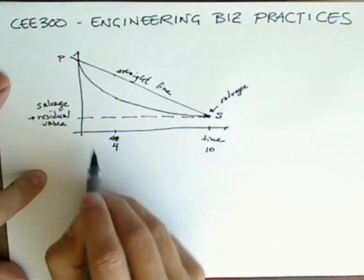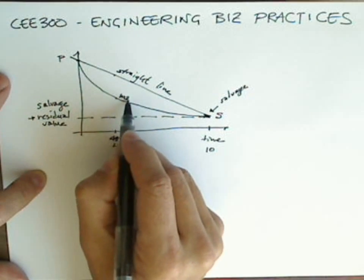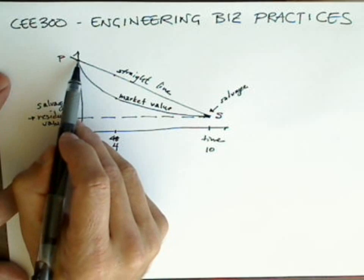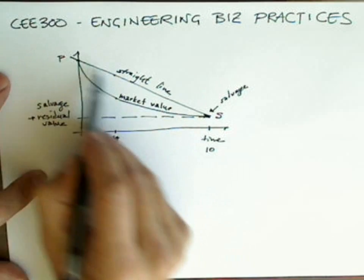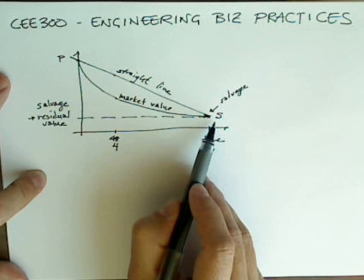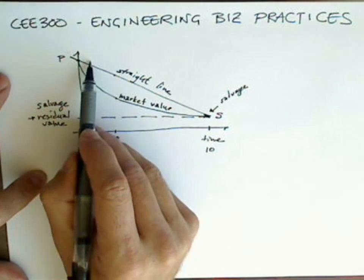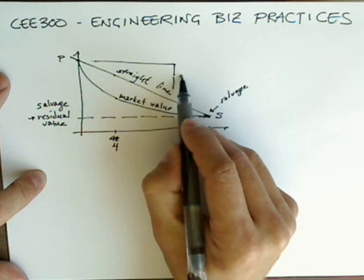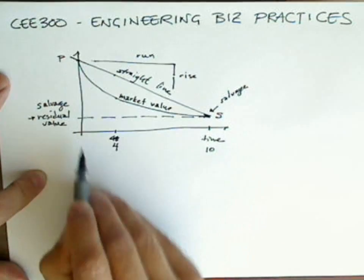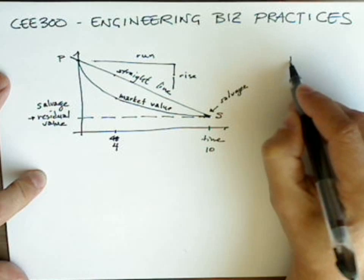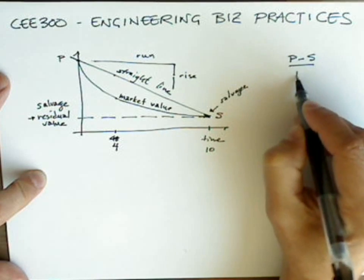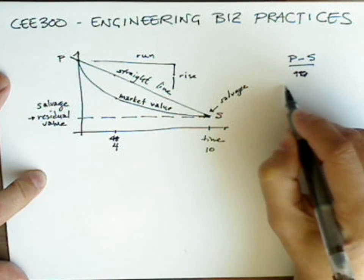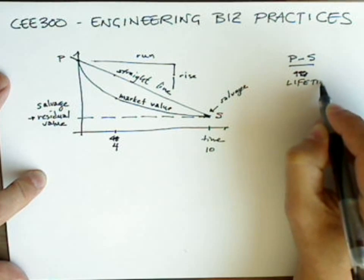Book value is not the same as market value. Book value is according to this approximation, this straight line depreciation. But we could compute the book value in any year if we just knew how rapidly the good depreciates. So the slope of any straight line is the rise over the run, and we can compute this slope by saying it's P minus S over the number of years. In this case, it's 10. So if I were going to generalize, I would say over the lifetime.